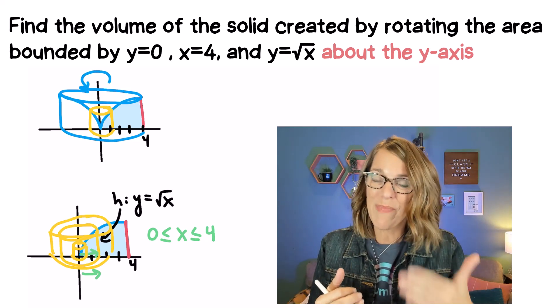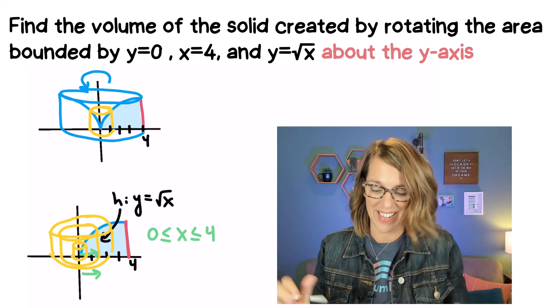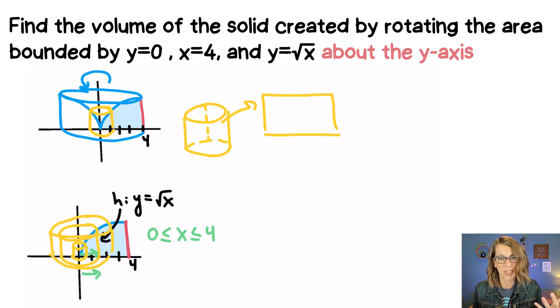So in order to get a volume out of this I'm going to take each of those cylinders and just flatten it. So I'm going to take that cylinder and I am going to cut it. I'm going to cut it down the side and as I cut it I end up unrolling it just like a paper towel roll and I end up with a rectangle.